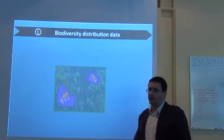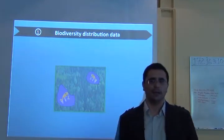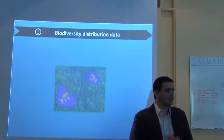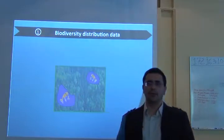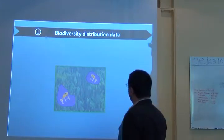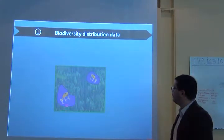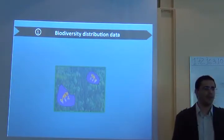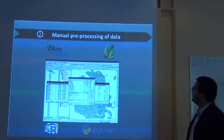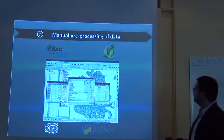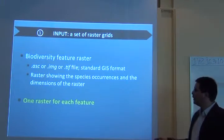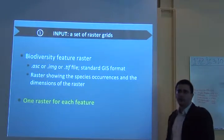So the first thing is that you need to get the biodiversity distribution data into zonation. All the data that you've been working with and putting range maps into grids, you need to do all that before. So you have for example your region and the distribution of a given species from a range map.